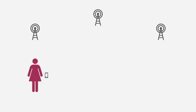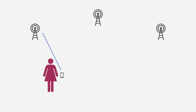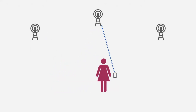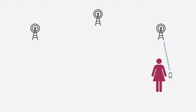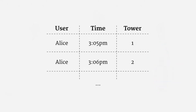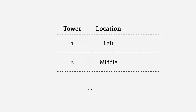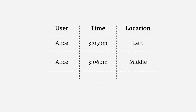The basic idea is straightforward. A cell network consists of a set of cell towers, and a person's cell phone connects to those towers. As a simplification, assume Alice's phone always connects to the nearest tower. As Alice physically moves around, her phone hops between towers. Alice's phone company keeps a list of which towers she was connected to and when, and also keeps a list of where its towers are located. By combining those two lists, it's very easy to get a rough estimate of where Alice has been.